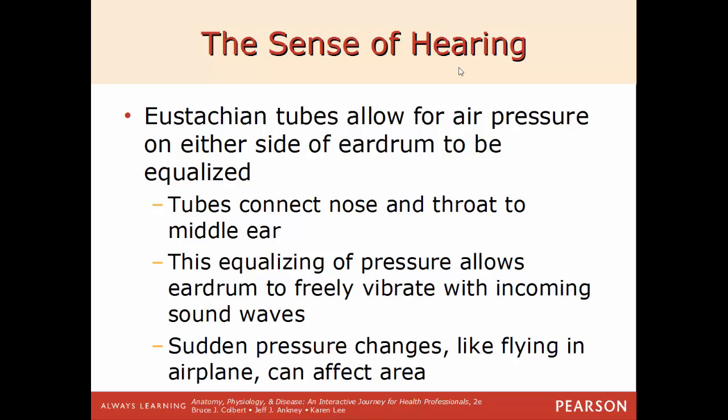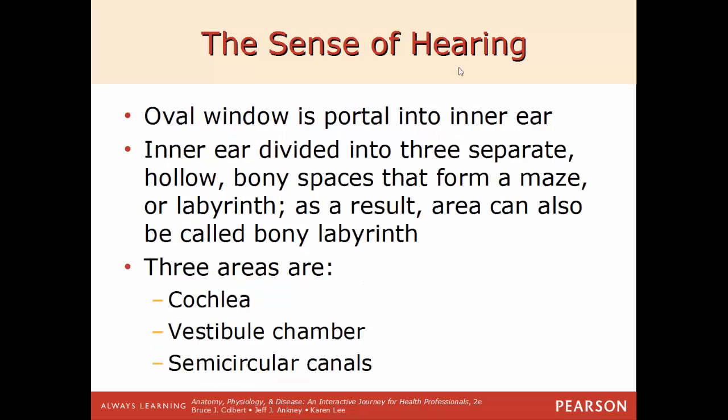The Eustachian tubes or auditory tubes allow air pressure on either side of the eardrum to be equalized, connecting the nose and throat to the middle ear. This equalization allows the eardrum to freely vibrate with incoming sound waves. If you've ever been on an airplane or at a high elevation and felt like your head was in a barrel, it's because the pressure is unequal on either side due to blocked Eustachian tubes. Chewing gum or moving your jaw helps free up this pressure — what you're doing is equalizing the pressure in the Eustachian tubes.